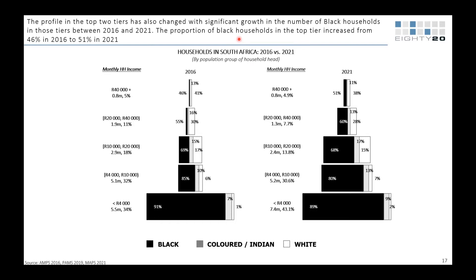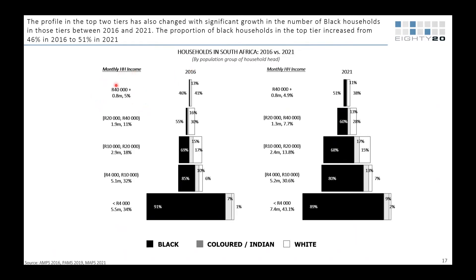Looking at a profile of the top income groups from 2016 versus 2021 data: at the top household income band of 40,000 plus, there were about 0.8 million people — there still are — and it's stayed roughly the same, with 46% Black compared to 51% Black. This is based on the population group of the head of the household, which is changing in South Africa.